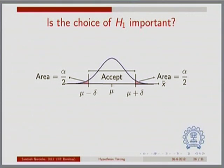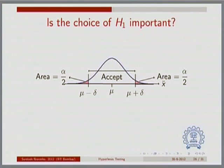Is the choice of an alternate statement important? Because if you think about the procedure, the sketch on this slide has nothing to do with H1 yet — it is only about H0. When I say H0: mu equals mu0, I get this curve and this interval centered around mu, and that becomes my acceptance region for H0. At this point there is no mention of H1, and if the entire decision-making about a test is about this acceptance region, at first sight H1 is not important. But it turns out H1 is important for a subtle reason — because you can control the rigor with which we carry out this test.